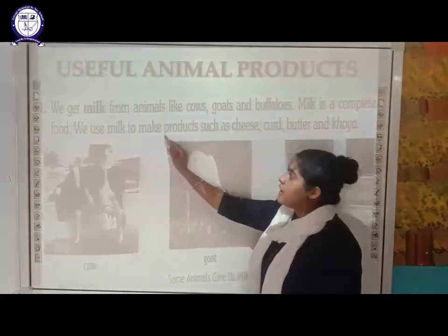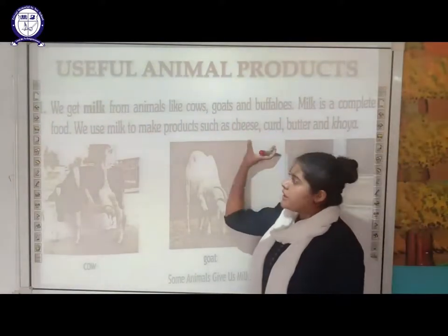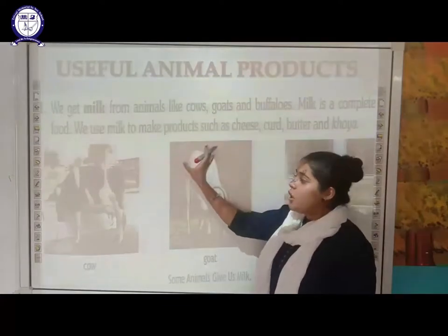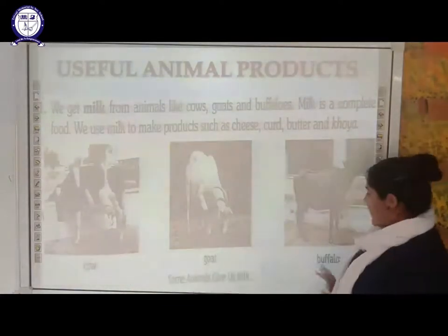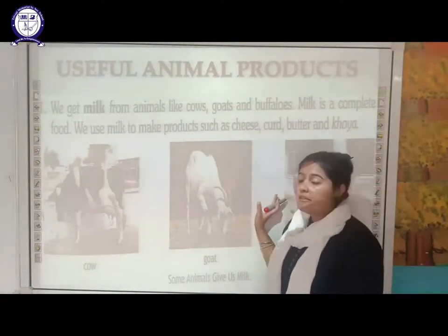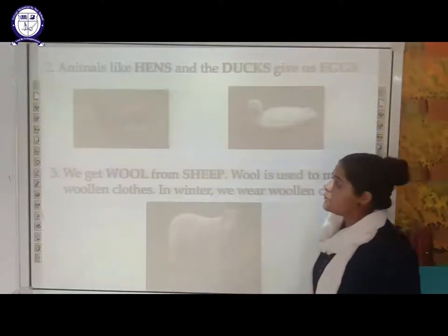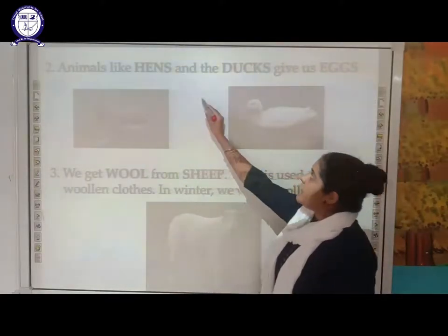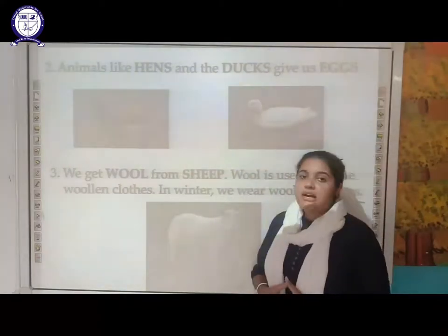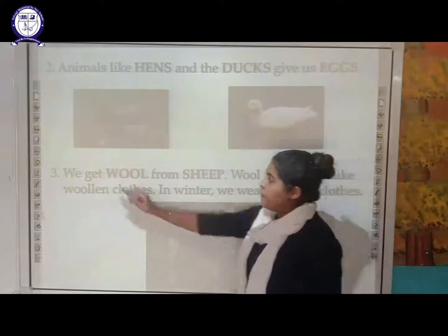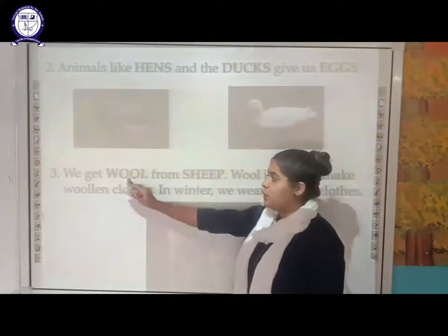We use milk to make products such as cheese, curd, butter, and ghee. These milk products are obtained from cows, goats, and buffalo. Animals like hens and ducks give us eggs. Next, we get wool from sheep.